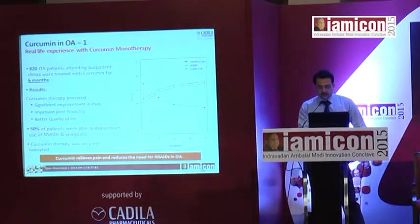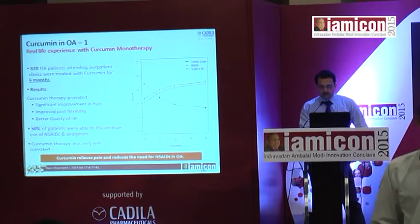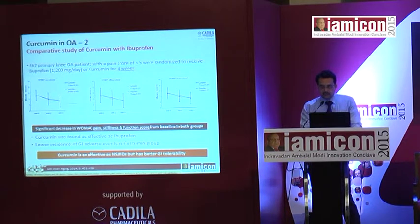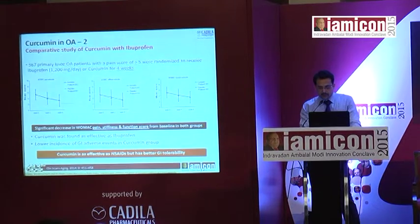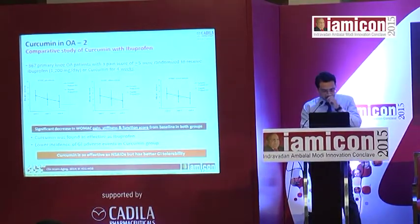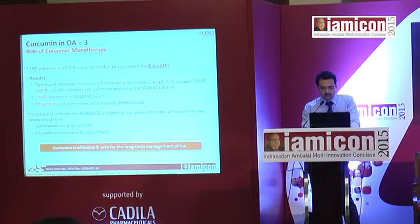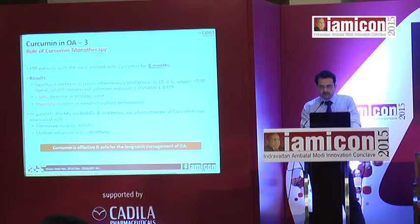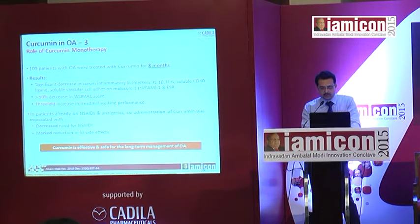Curcumin reduces pain and reduces the need for NSAIDs in osteoarthritis, thereby reducing NSAID-related side effects. It can be compared with ibuprofen, showing significant decrease in pain, stiffness, and functional scores. It can also be used as monotherapy, with many patients showing good results and it being very safe for up to 8 months — the maximum trial duration to date — and effective for long-term management.